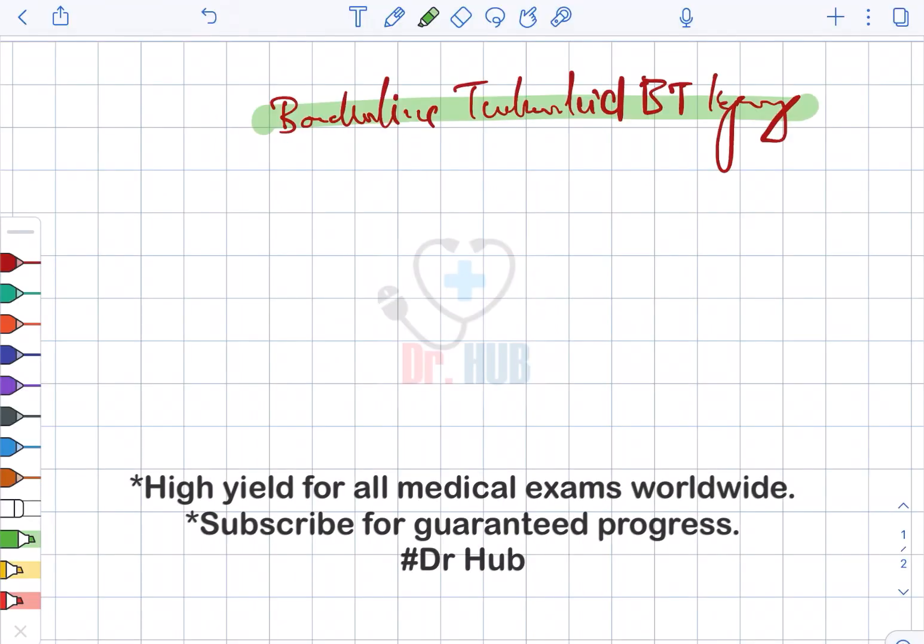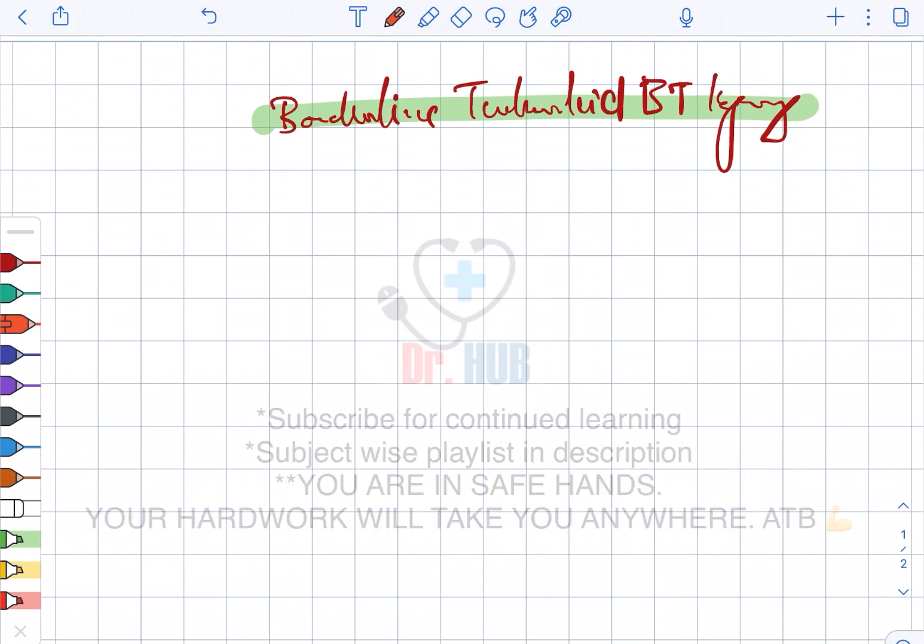Hello doctors, have a beautiful day. Today we are looking at borderline tuberculoid, that is BT leprosy. The BT leprosy - the number of lesions and type of lesions are hypopigmented.